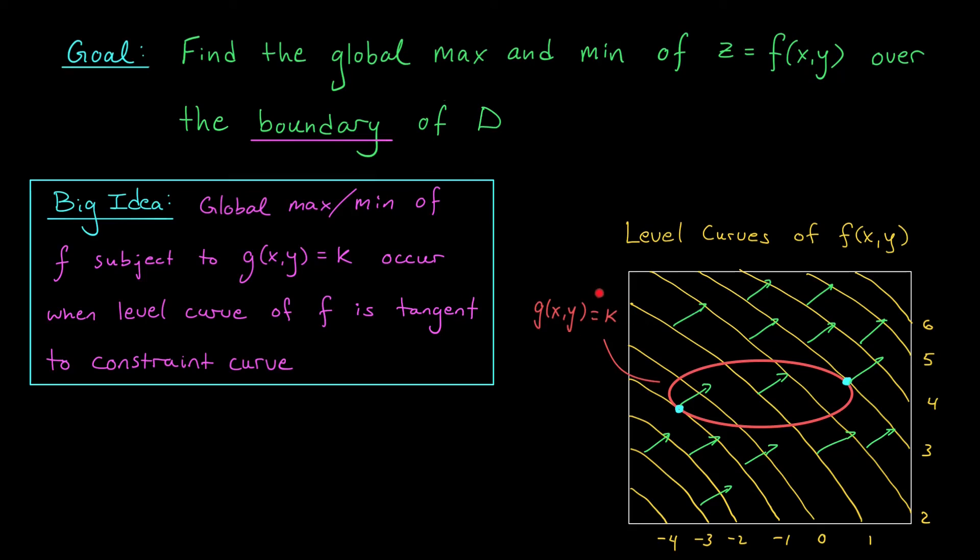So whatever the gradients are doing here, they're going to be pointing orthogonally to this elliptical boundary. They might be pointing in, they might be pointing out. We're not sure, but the gradients are going to look something like this.